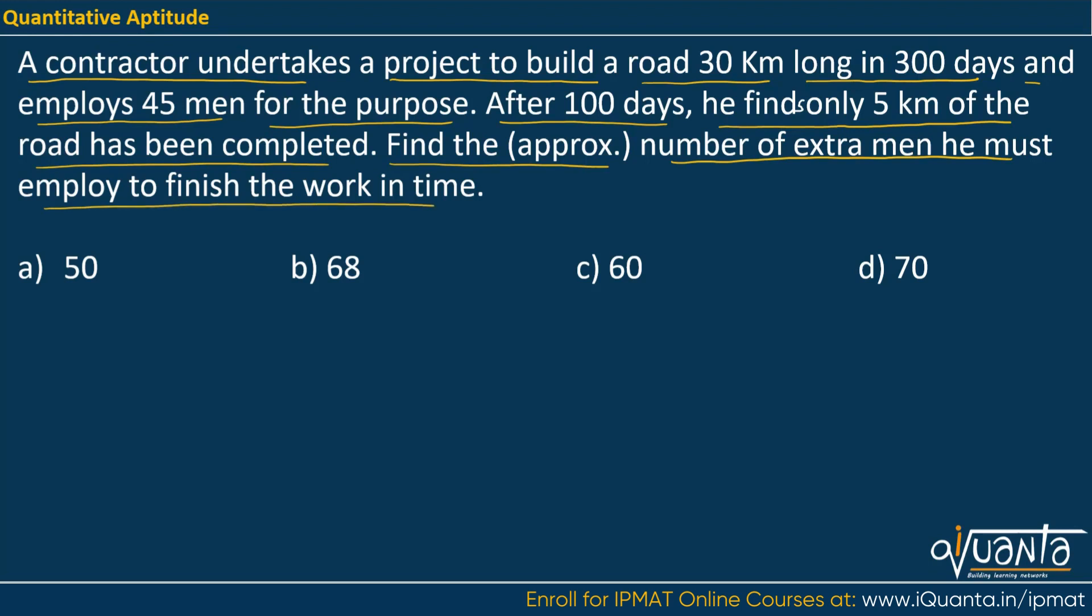So in such questions what we basically do to find out the work, we multiply men and days. So that gives us the total work. So men into days, man days is the work that we have. So using this relation I can say that if the work is constant, then if you increase the number of men, then the number of days decreases. If you decrease the number of men, then the number of days required to complete the same work increases.